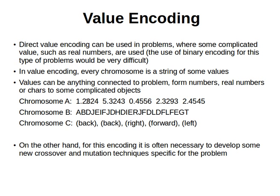The idea is that we can't use binary encoding when we have real numbers, and permutation encoding is also not applicable here. The best approach is to use a string of values. The downside of this kind of encoding is that it's usually necessary to develop new crossover and mutation techniques specific to the problem being solved.